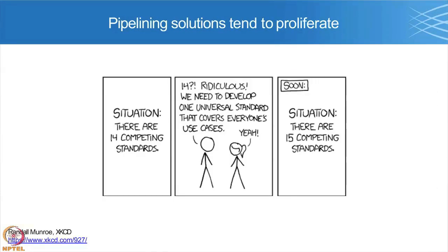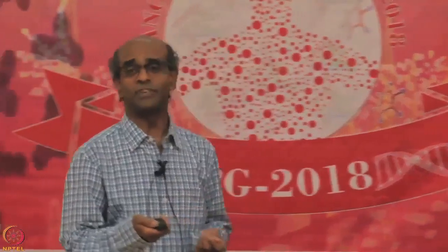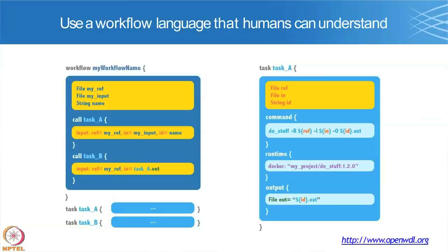There are many ways to take a script and make it into a pipeline — humorously illustrated by the situation of 14 competing standards leading to a 15th. There are graphical tools where you lay out boxes for data filtering, normalization, and so on, connecting them with arrows. However, the problem with graphical pipelines is that if you want to change a threshold or rerun with a different dataset, you have to open the interface and manually make changes, making them less amenable to higher levels of automation.